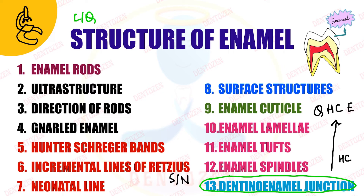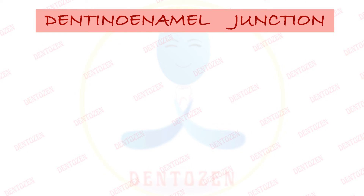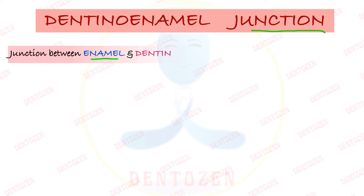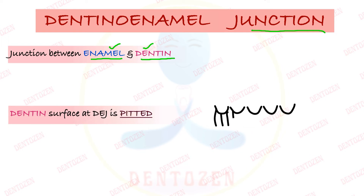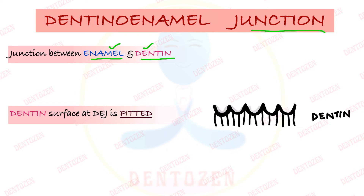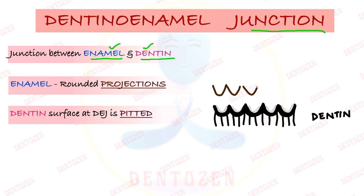For your exam, start with the introduction: as the name says, it is a junction present between enamel and dentine. Now let's see how enamel and dentine appear at this junction. Dentine has a pitted appearance — that means it has pits, or shallow depressions, on its surface. Shallow means not very deep.